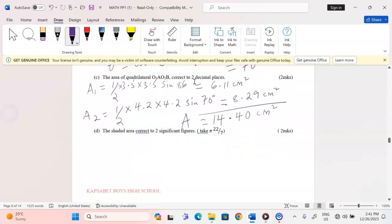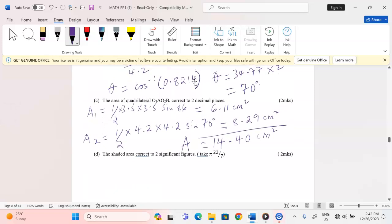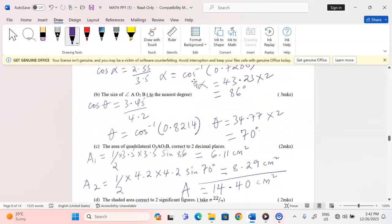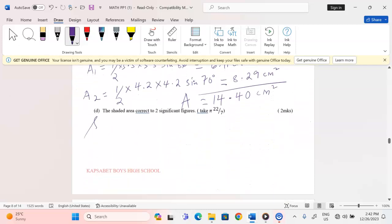And finally, we are told to find the shaded area correct to two significant figures using pi as 22 out of 7. Therefore, we're going to get area of sector O1AB. This sector is subtracted from the total area because it is the unshaded part, and we will get the shaded area.